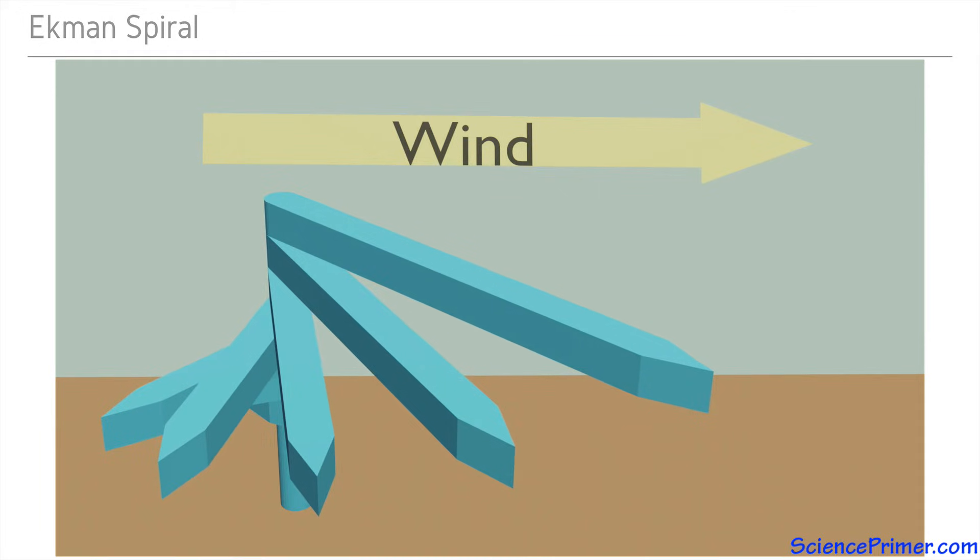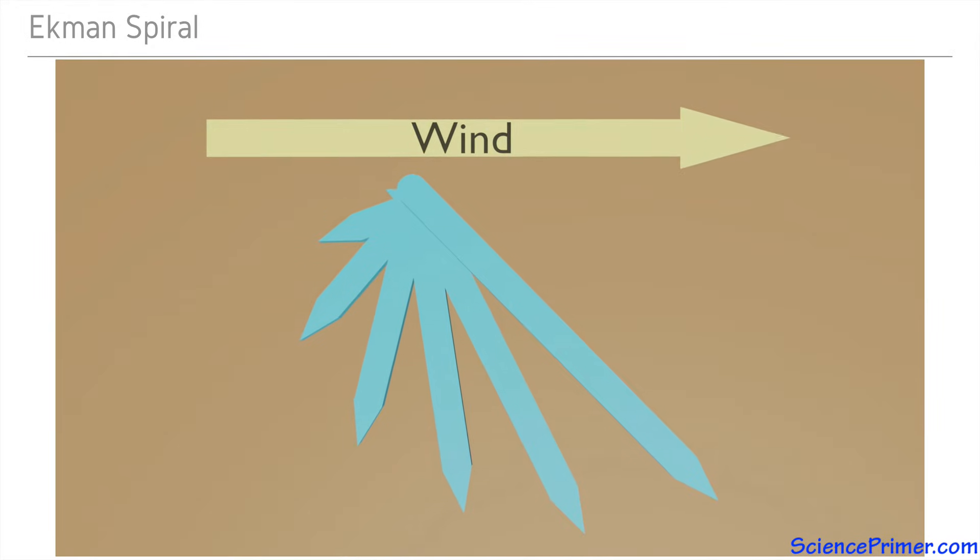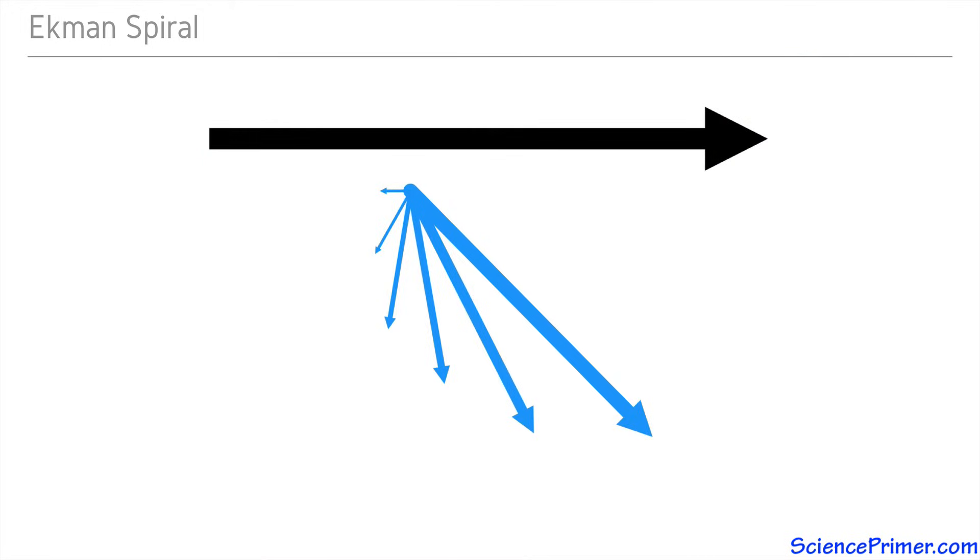One result of this deflection pattern is that at depth, a small amount of water is actually moving in the completely opposite direction than the wind that started the motion in the first place. Because water movement diminishes quickly with depth, Ekman showed that the net transfer of water is at a 90 degree angle to wind direction.